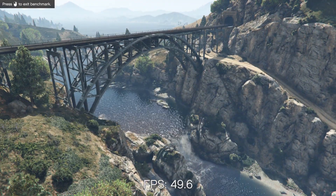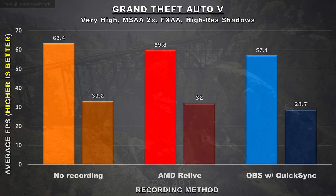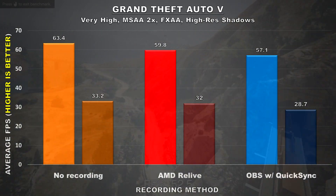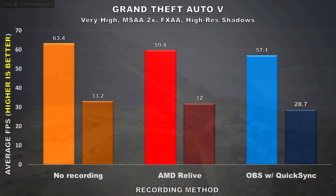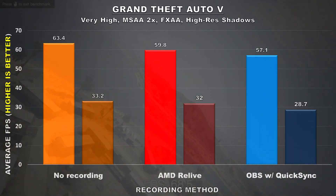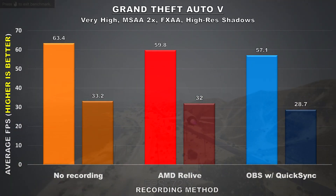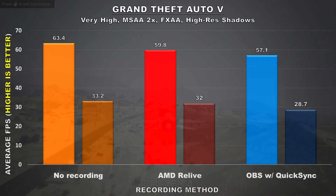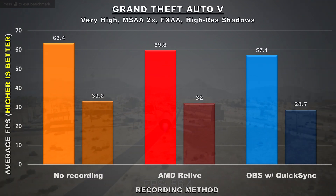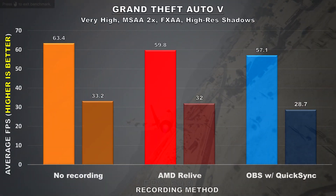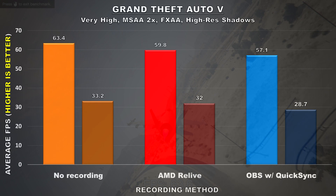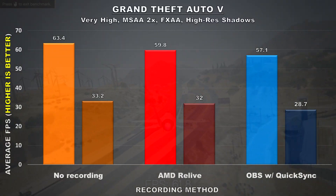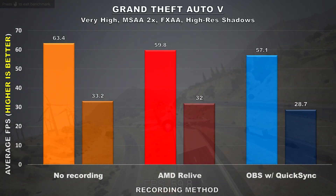Moving on to GTA V. Without recording, an average of 63.4 FPS was attained with a minimum of 33.2. With AMD Relive the average was 59.8 FPS and the minimum was 32 FPS. OBS with QuickSync shows a difference of about 6 FPS, with minimums also lower at just 28.8 FPS. So in GTA V, recording with AMD's Relive allows you to maintain performance relatively close to what you'd get without recording.